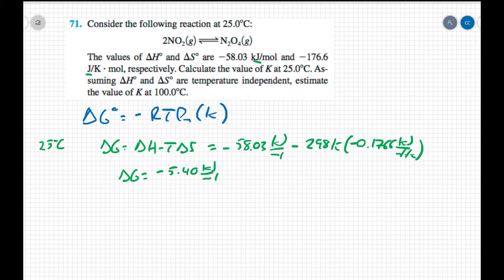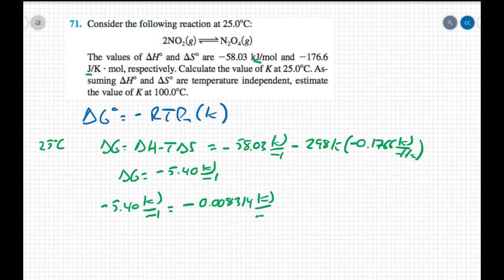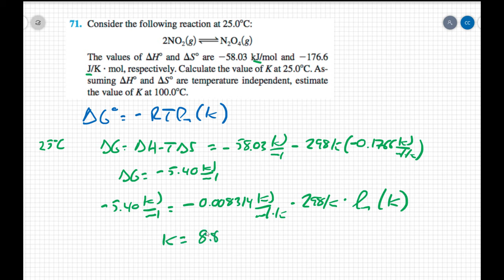Now I can plug into the equation. ΔG = -5.40 kJ/mol equals the negative of R — expressed in kilojoules: 0.008314 kJ/(mol·K) — times the temperature 298 K, times the natural log of the equilibrium constant. Solving for K gives K = 8.85.